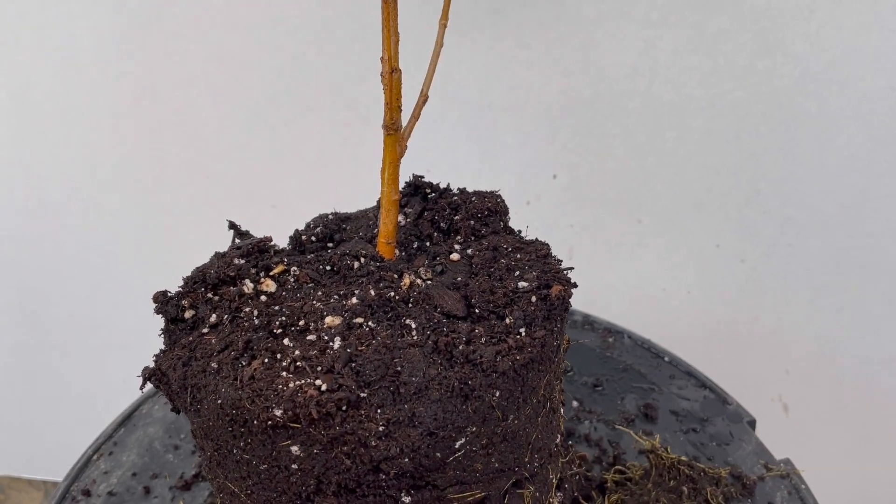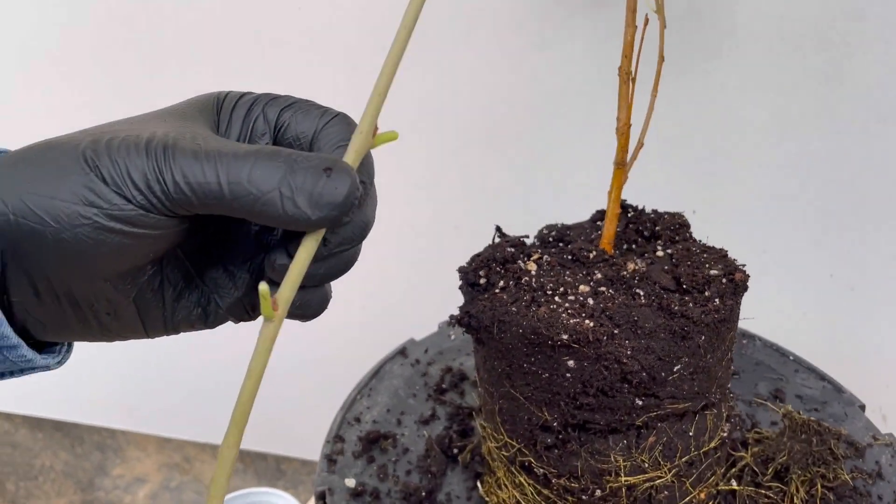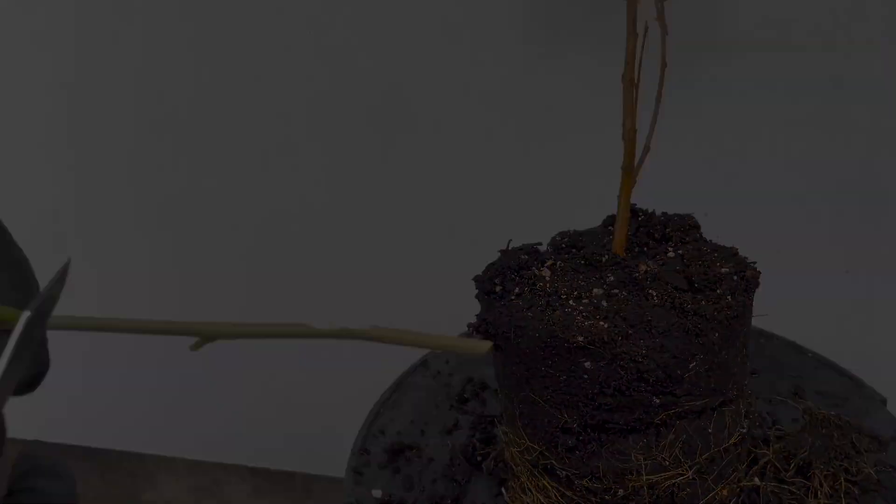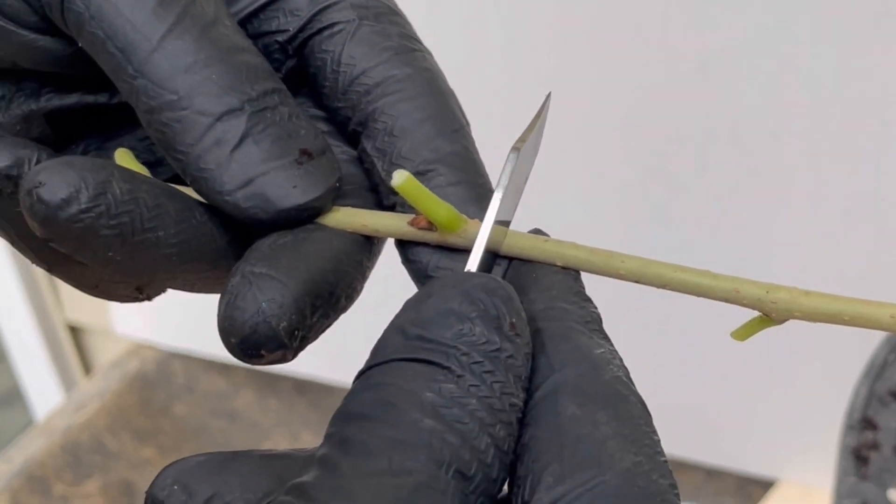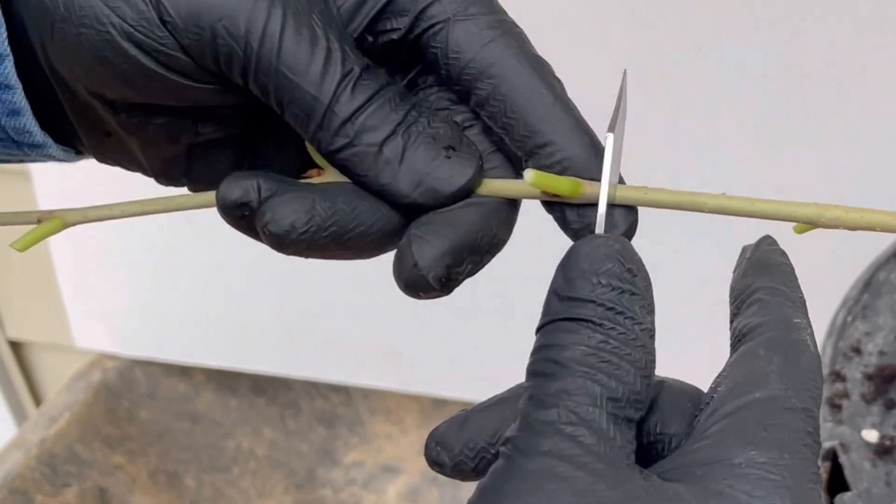We're going to take a bud here off the scion. I think we'll do this one right here. And for this one, I'm going to remove the wood because it's such a small rootstock.